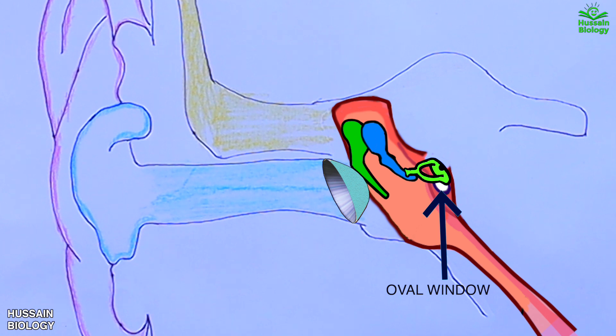So we can say this stapes bone communicates with inner ear through oval window.